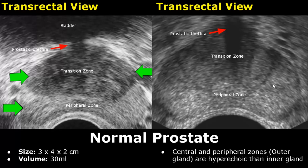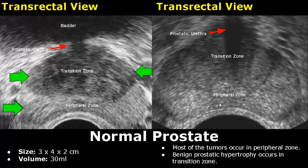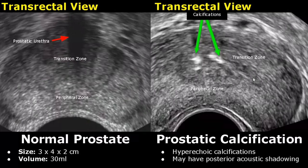Most of the tumors and cancers occur in the peripheral zone, and benign prostatic hypertrophy mostly occurs in the transition zone. Calcifications in the prostate appear hyperechoic and may have posterior acoustic shadowing if the calcifications are large enough.